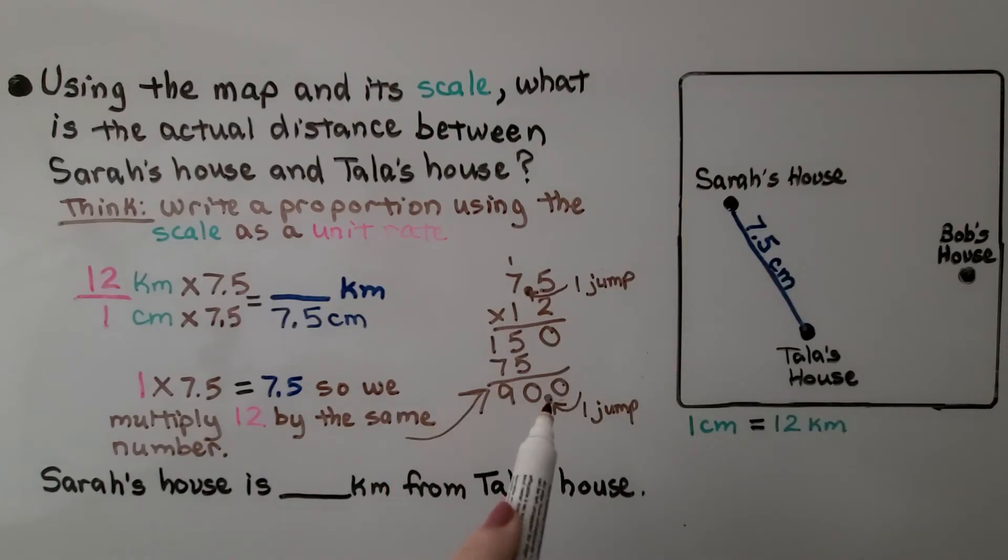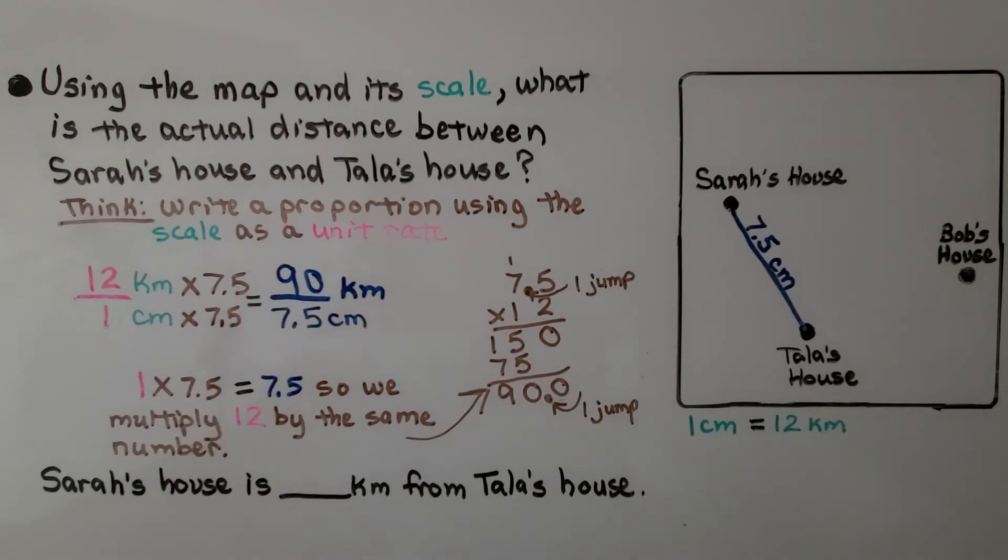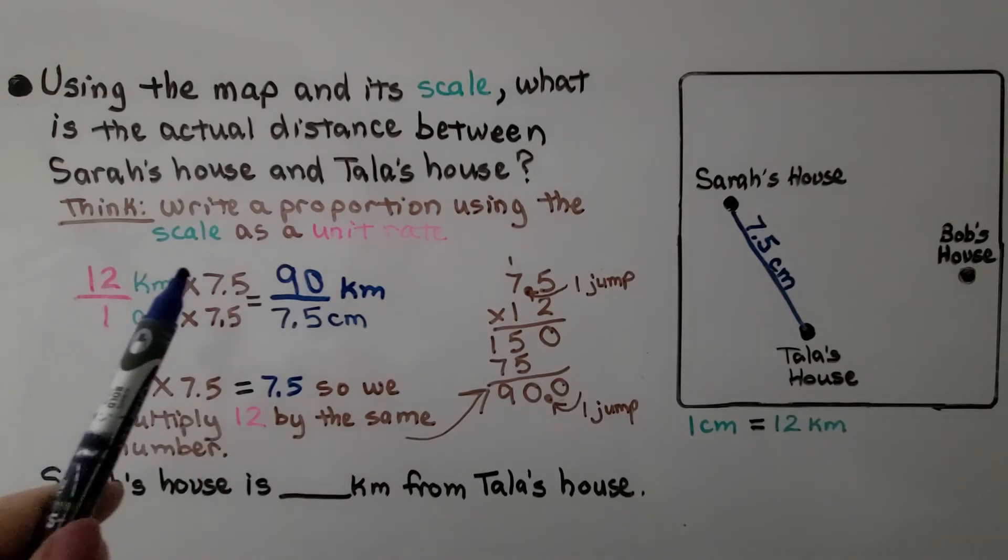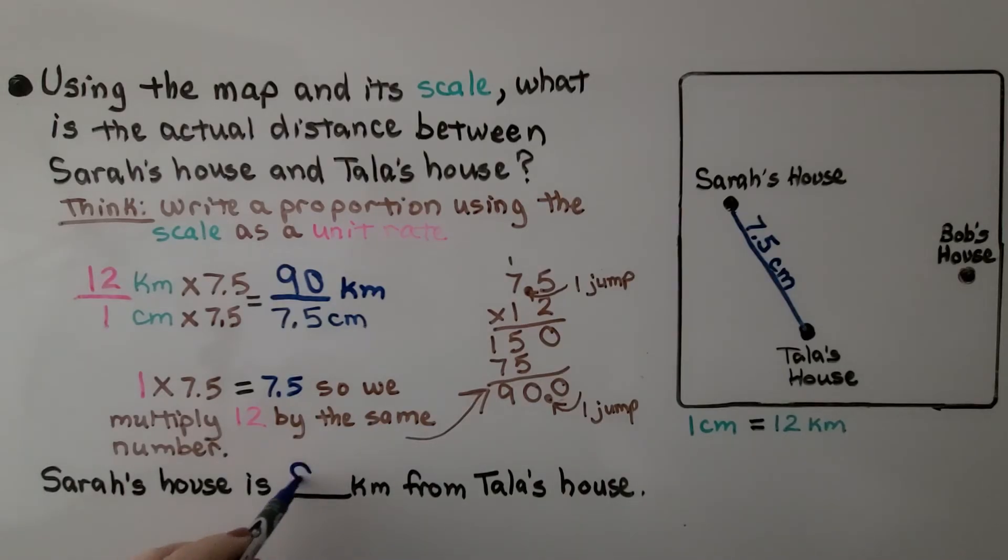Which means the product is going to have 1. So we get a 90. So we know this is a 90. We multiply 1 times 7.5, which equals 7.5. So we multiply 12 by the same number, 7.5. And we get 90. So Sarah's house is 90 kilometers from Tala's house.